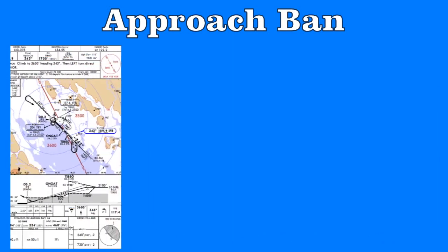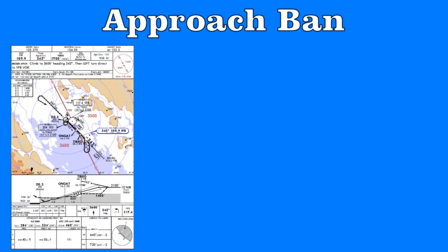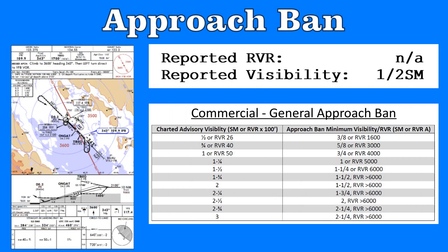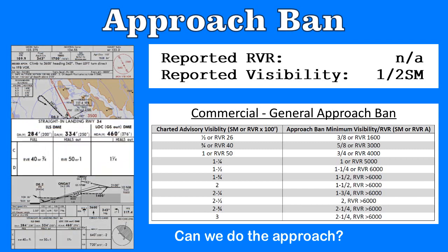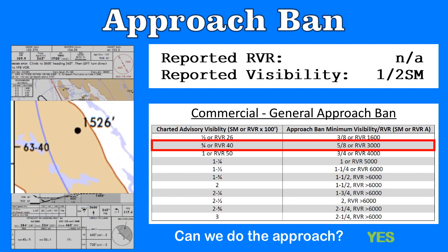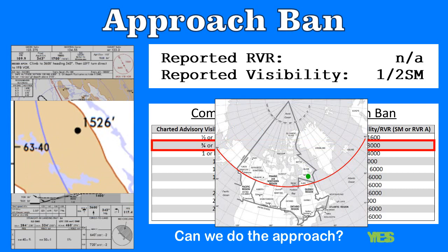For our last example, we're going to plan on the ILS runway 34 in Iqaluit, Nunavut. Again, we're considering a commercial operator without the special OPSPEC, using the general table. The RVR is not working today and the visibility is reported as one half mile. Can we do the approach? A quick look at the table shows we need RVR 4000 or three-quarters of a mile. When we switch to our approach ban table, we see that this requires at least a minimum of five-eighths of a mile or RVR 3000. So without the RVR value available, we have to have greater than five-eighths, but the visibility is only a half mile. Can we shoot the approach? If you answered yes, you are paying attention. Iqaluit is at 63 degrees north latitude, which is north of 60 degrees north. As a result, visibility cannot impose an approach ban. You may not make it in, but you are always allowed to try the ILS runway 34 as long as the RVR is not available.